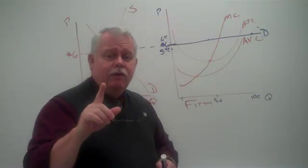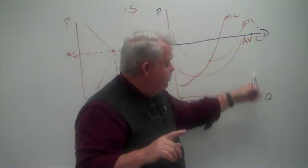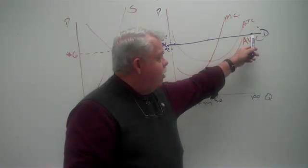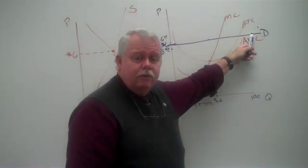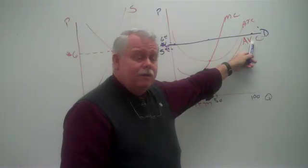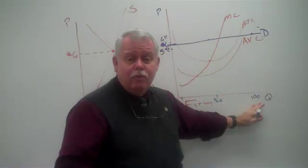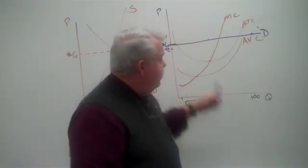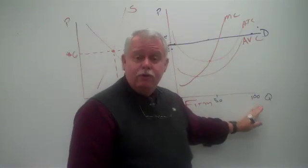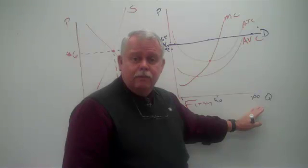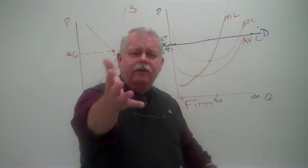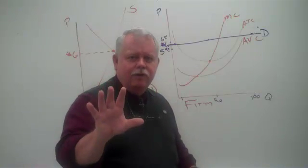Well, wait a minute. We know they can sell as much as they can produce, 100 units. That's the most they can produce. We know they can sell all of that for $6.00. Why would they want to sell it for $5.99? They're not going to sell any more than 100. That's all they can produce. So if they charge a price of $5.99 and they sell all 100 units, when they could have charged a price of $6.00 and sold all 100 units, what do we call that? Another economics term: stupid.